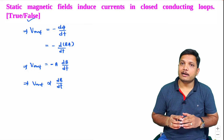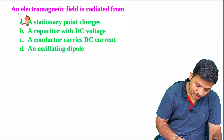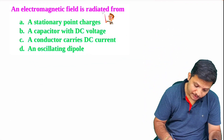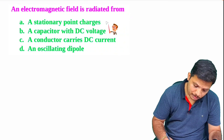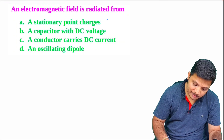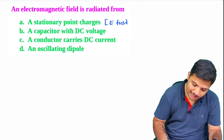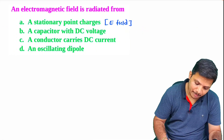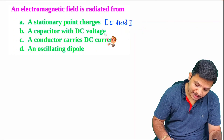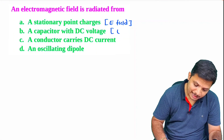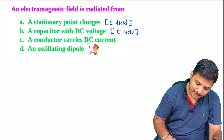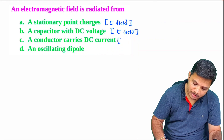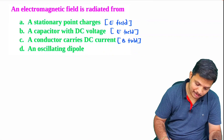Let us have the third question. 'An electromagnetic field is radiated from a stationary point charge.' Stationary point charges radiate electric field only — one should know this. They do not radiate a magnetic field. A capacitor with DC current has a constant magnetic field and does not have electric field radiation.